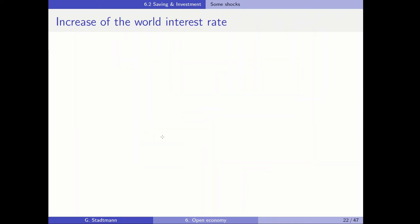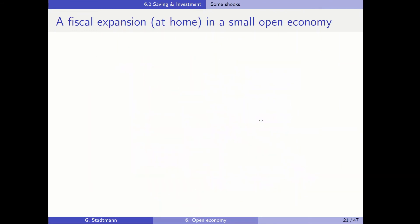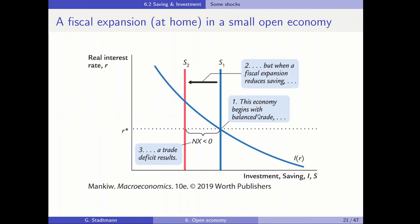Let's check this against empirical evidence for the US. In the 1980s, Ronald Reagan performed expansionary fiscal policy in the form of a tax cut. When the government decreased taxes, it decreased public savings and therefore national savings. Looking at the diagram, you can see the deterioration of the trade balance in the 1980s. The theoretical prediction is in line with the empirical evidence: a fiscal expansion leads to a trade balance deficit.